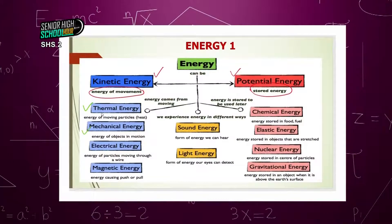We also have electrical energy — energy of particles moving through a wire. When you have electricity in your home, connections are made through wires and some movement takes place, giving you electrical energy. Then we have magnetic energy — energy causing a push or pull. Magnets either attract or repel, and that is magnetic energy.